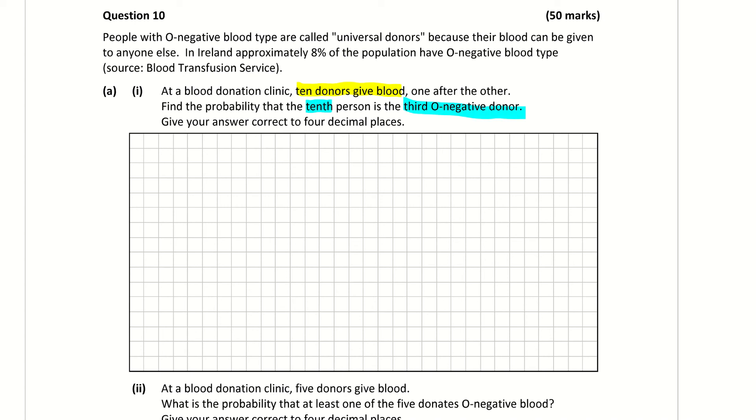So that means that the previous 9 people that give blood, 2 of them must be O negative and it doesn't matter where those 2 are. It could be the first 2, it could be the 7th and 8th, it doesn't matter, as long as they're in that first 9 group of people.